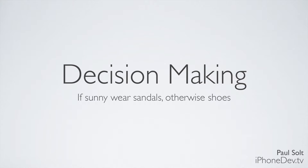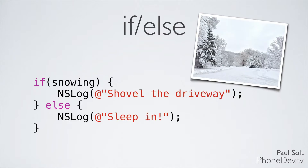An easy example of this is: if it's sunny out and it's hot out, you're going to wear sandals, otherwise you're probably going to wear shoes. So let's look at some new lines of code that we haven't seen before. This is the if-else statement — how we can do this or that in a computer program or application.